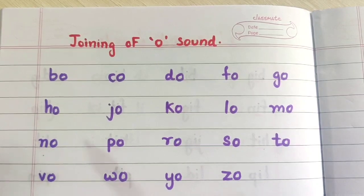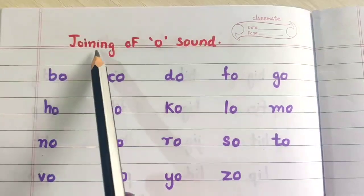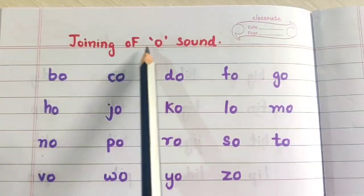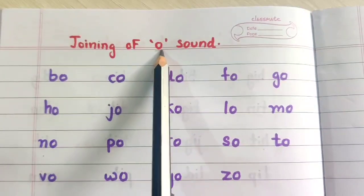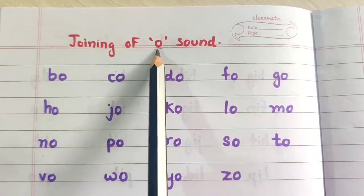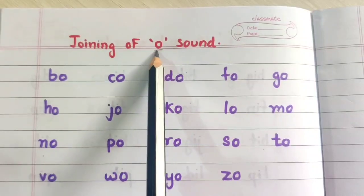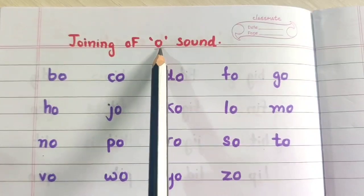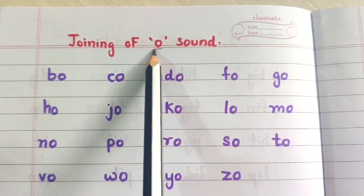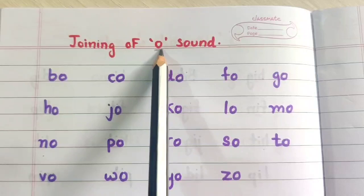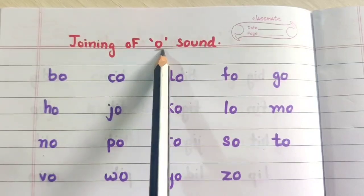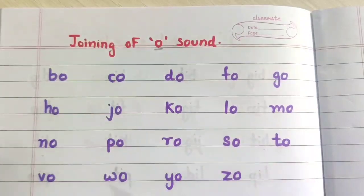Hi everyone. Welcome back. Today we are going to learn the joining of O sound words. O sound. This is a short vowel sound of O. That is O sound.